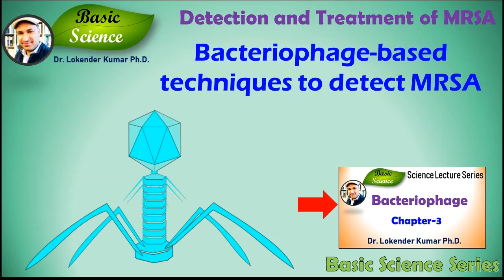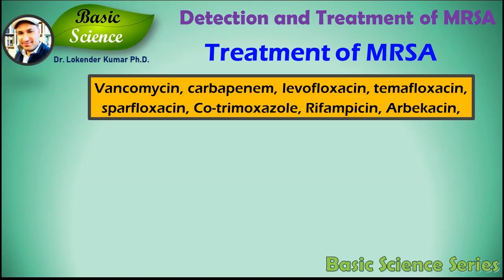Another interesting technique is the bacteriophage-based technique to detect MRSA infection. Bacteriophage cocktails can be used to kill the bacteria, and an increase in bacteriophage population can represent the indirect identification of the presence of Staphylococcus aureus. To know in detail about bacteriophages, please refer to presentation number 3.